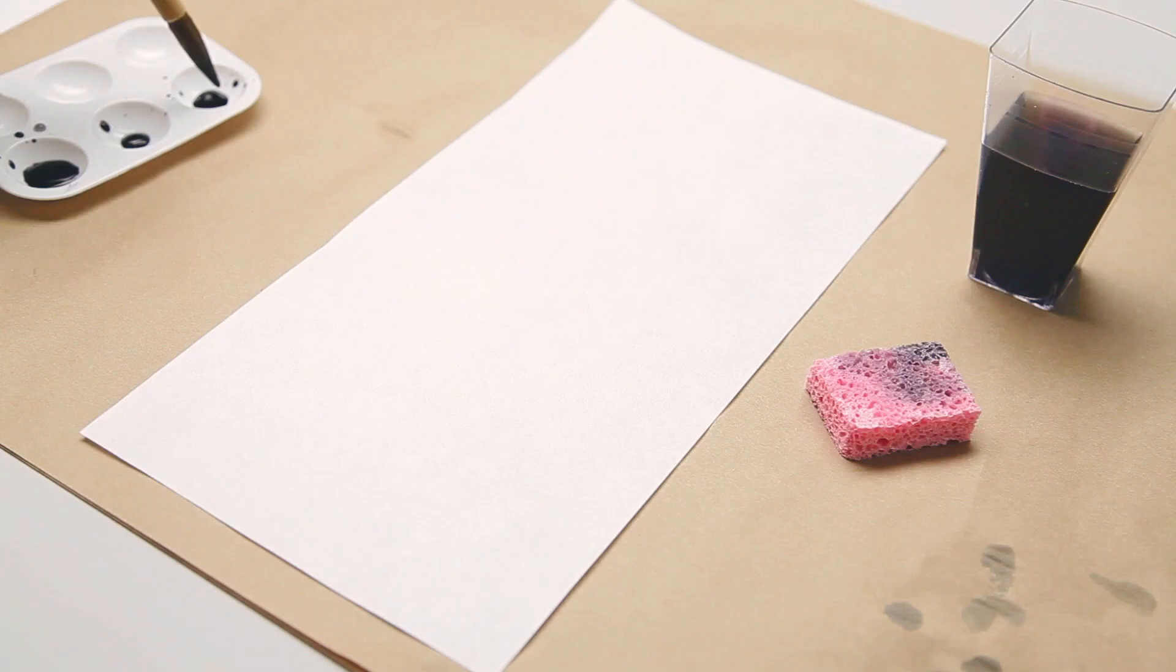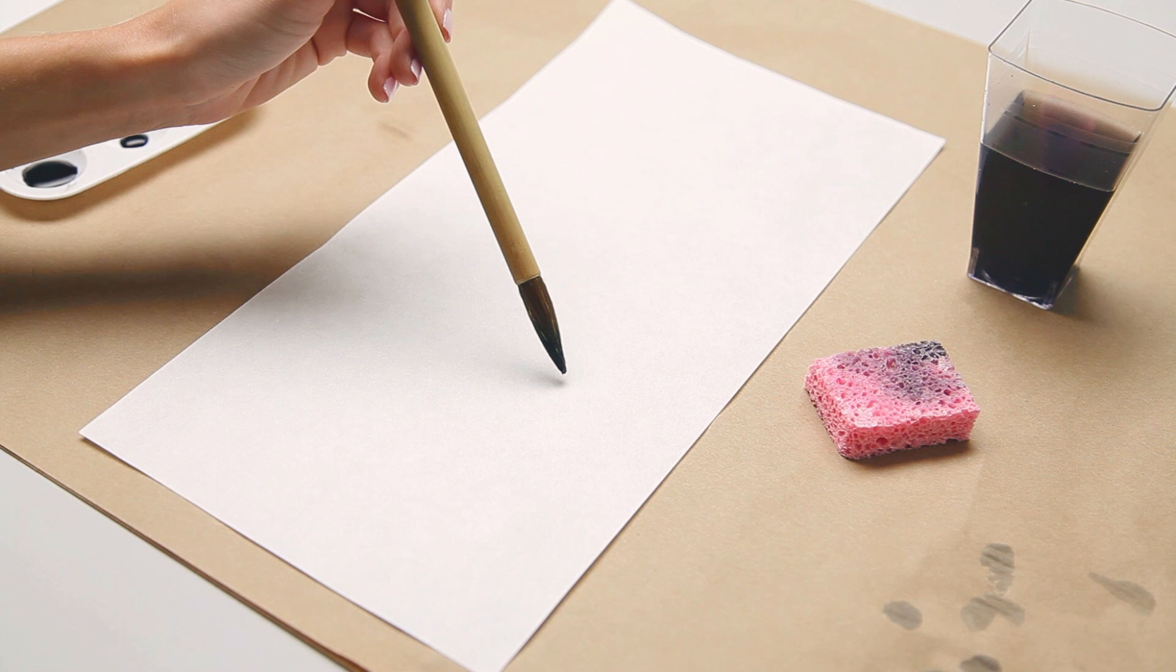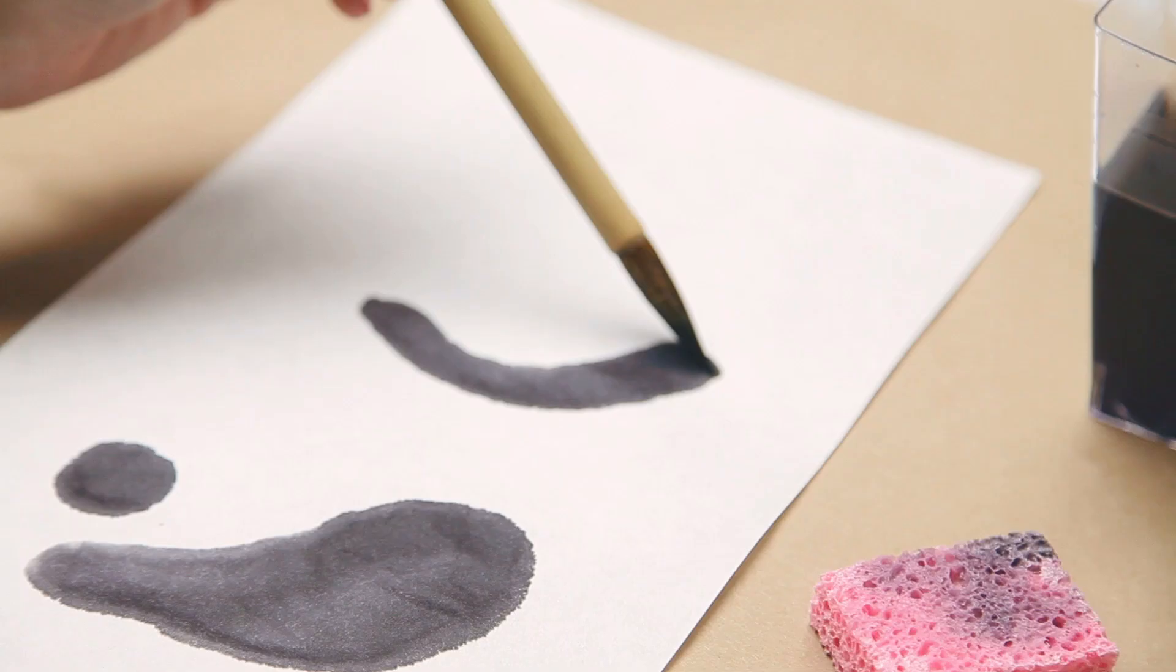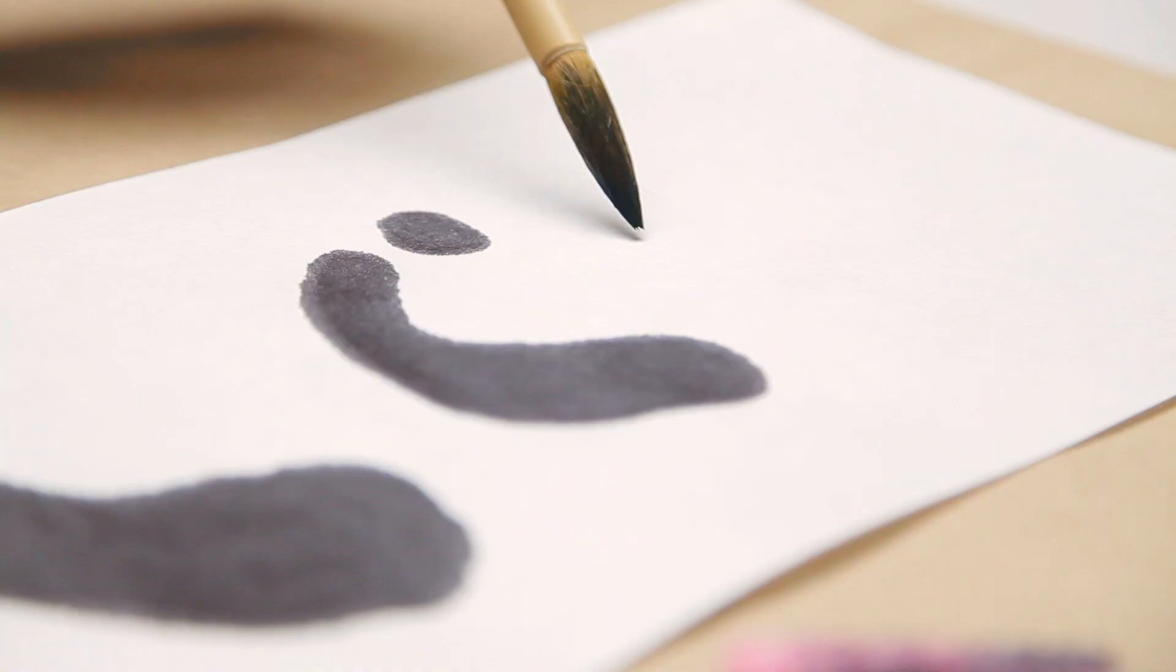Let's practice by painting a panda. Feel free to use your practice pad until you feel confident to use your rice paper. First, let's paint the legs. Paint a big bean shape near the bottom of your paper, and then a smaller circle next to that. Paint another set for the arms.